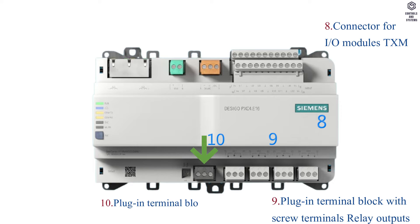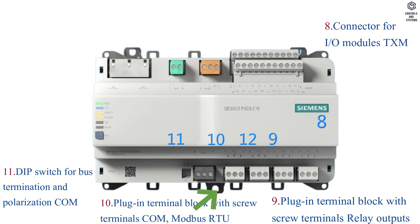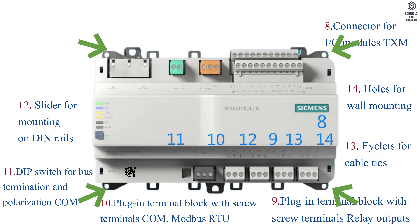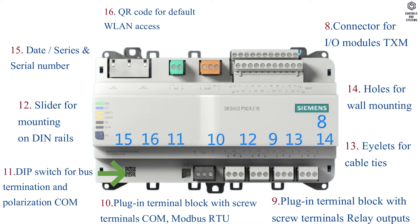10. Plug-in Terminal Block with Screwed Terminals for COM Modbus RTU. 11. Dip Switch for Bus Termination and Polarization COM. 12. Slider for Mounting on DIN Rails. 13. Eyelids for Cable Ties. 14. Holes for Wall Mounting. 15. Date, Series and Serial Number. 16. QR Code for Default WLAN Access.